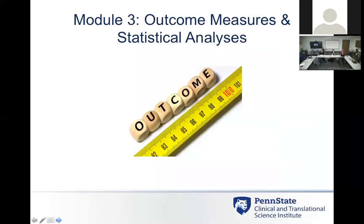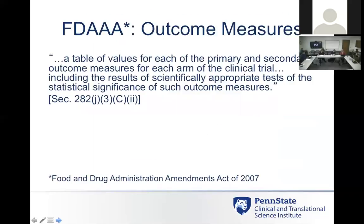Module three is Outcomes Measures and Statistical Analysis — this is where it gets more difficult to complete the information, depending on how complex your study is. There are tables of values for the primary and secondary outcome measures for each arm, and you also have to include the scientifically appropriate statistical significance and statistical analysis for all the different interventions.